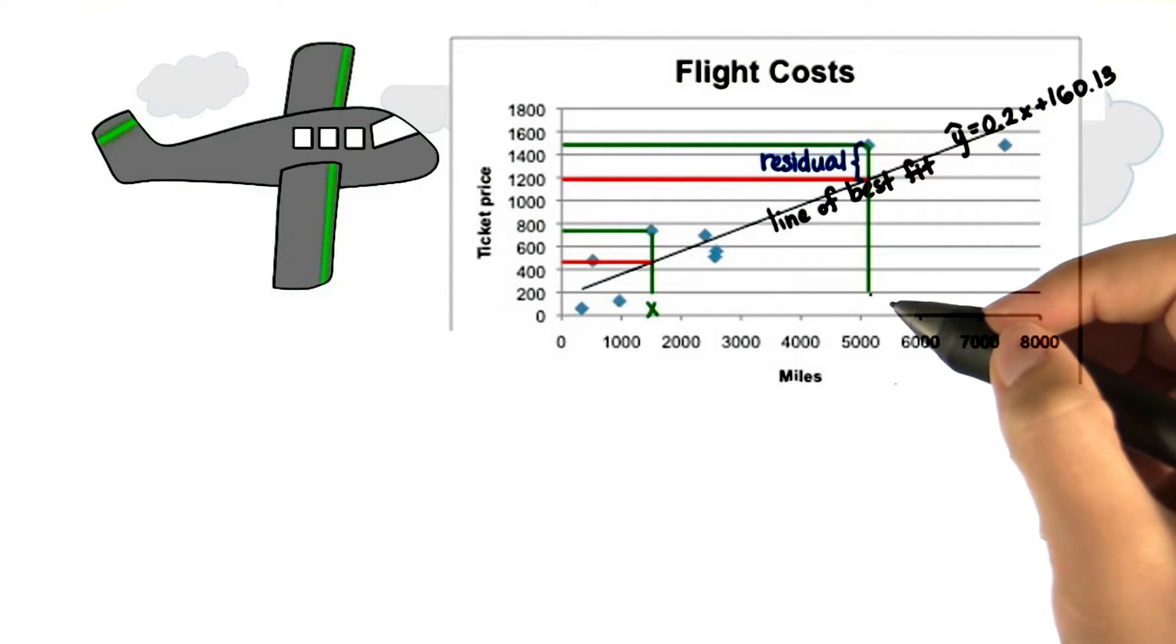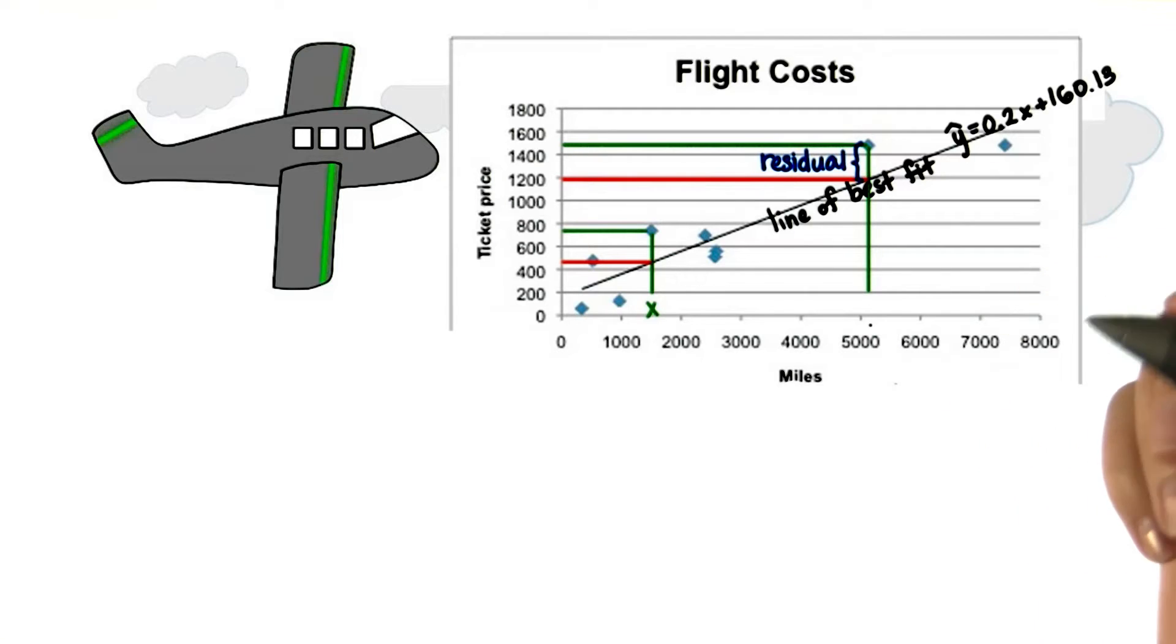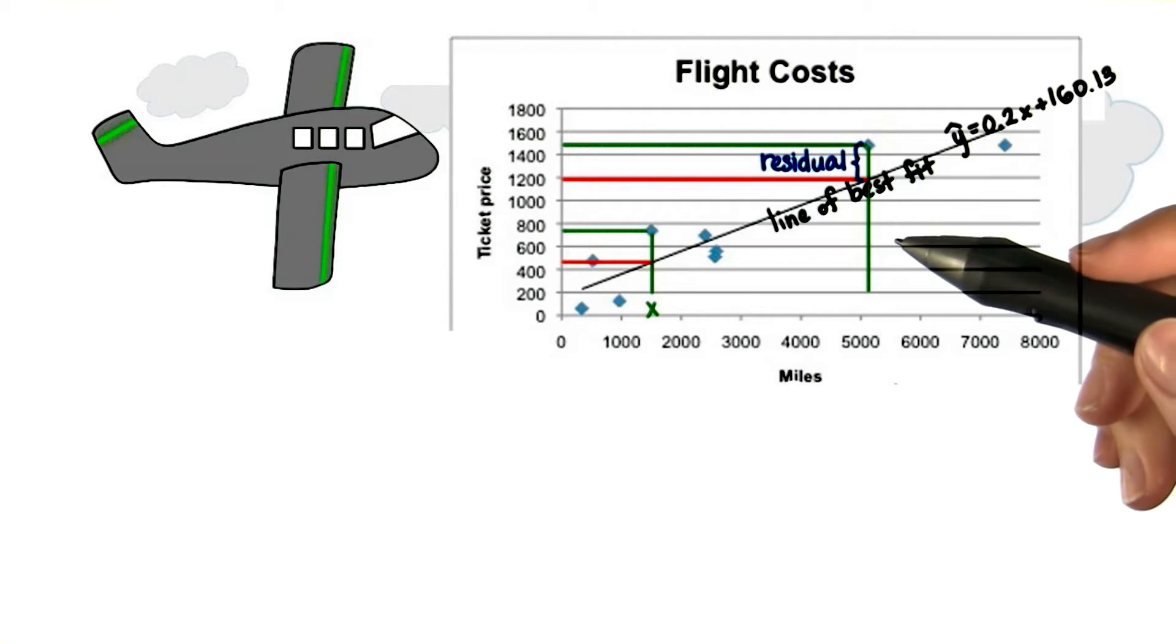Now, we don't expect our predictions to be 100% accurate. There will almost always be some error in our predictions. And that's in terms of the residuals. How can we quantify how much error we have?